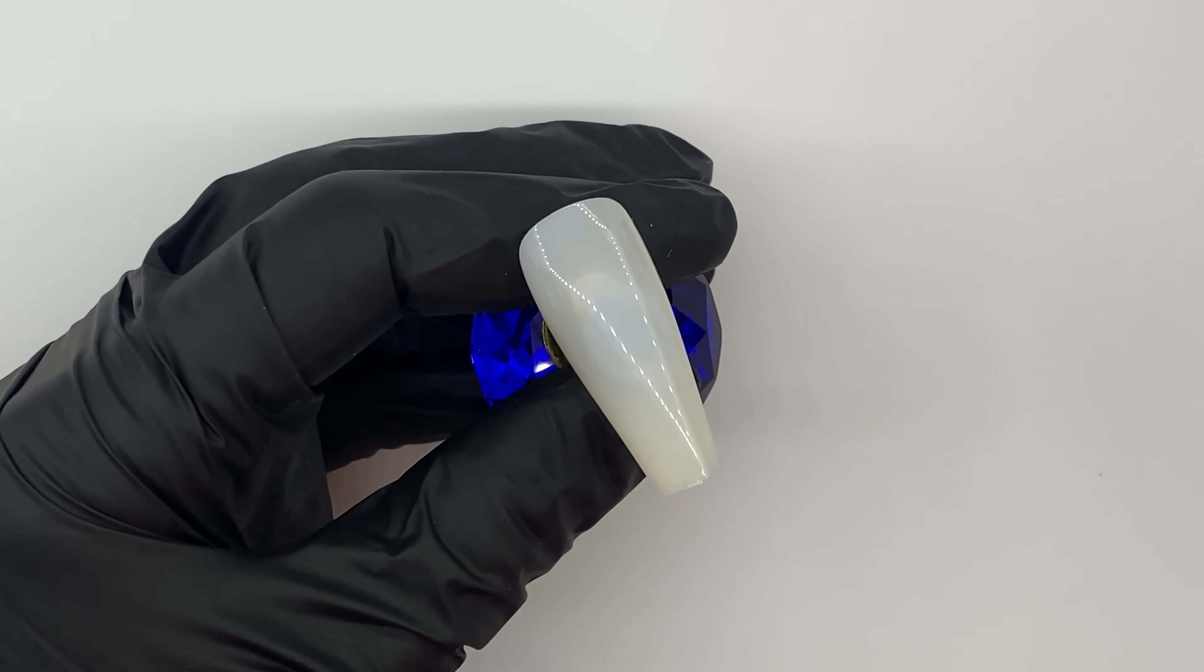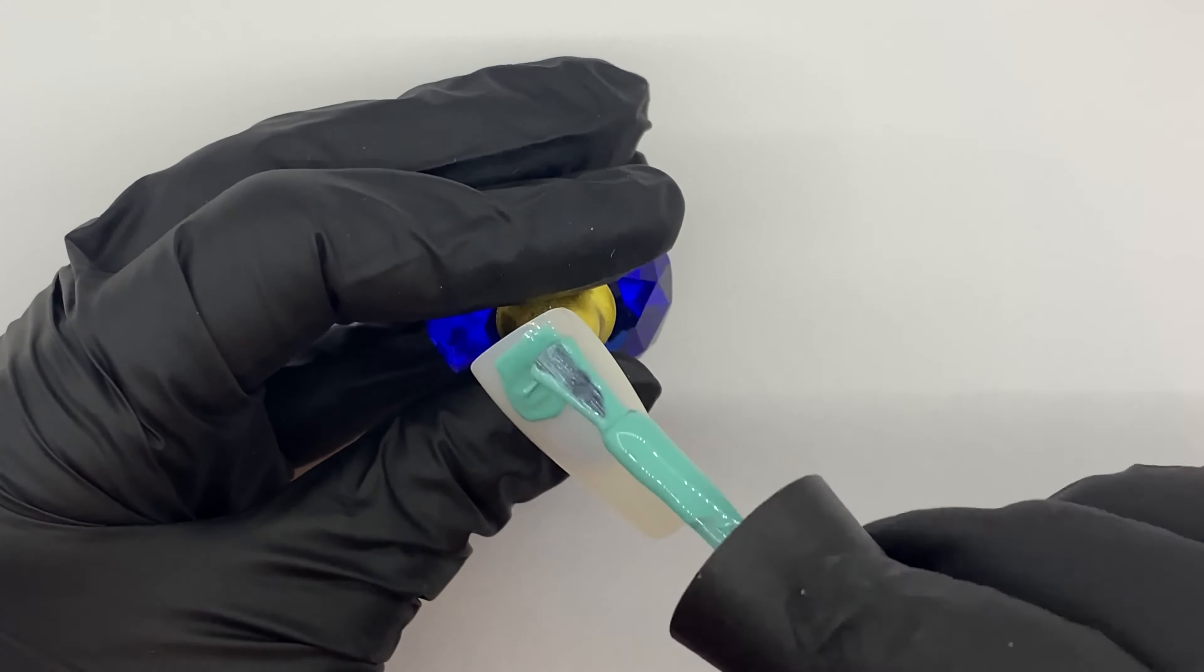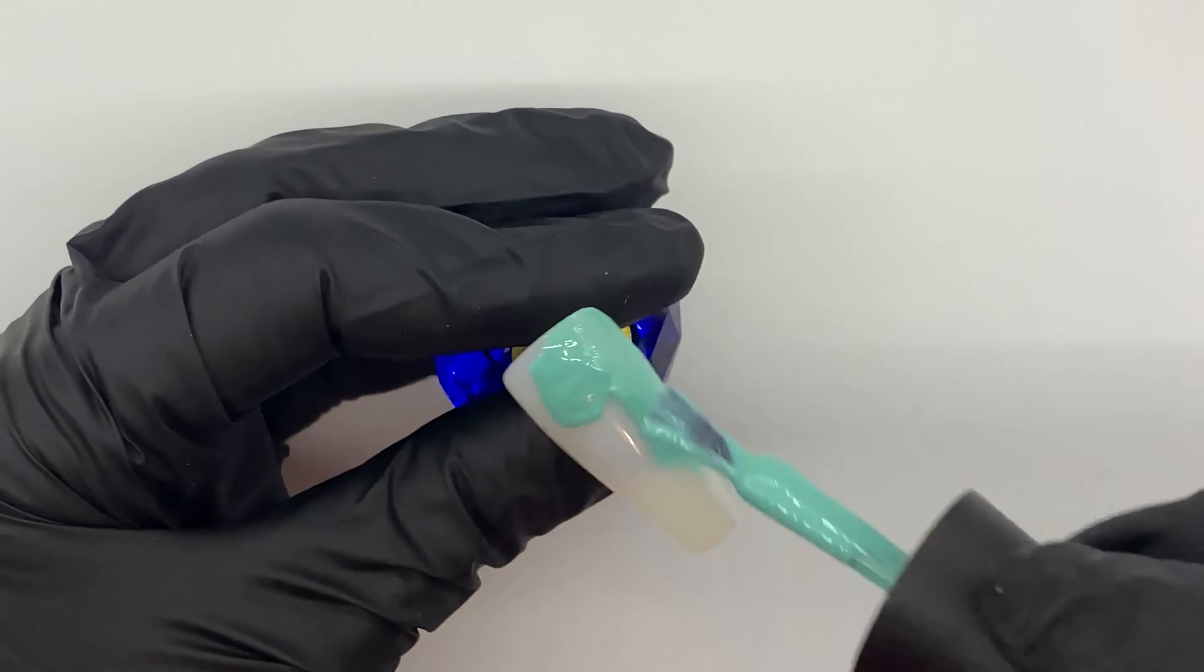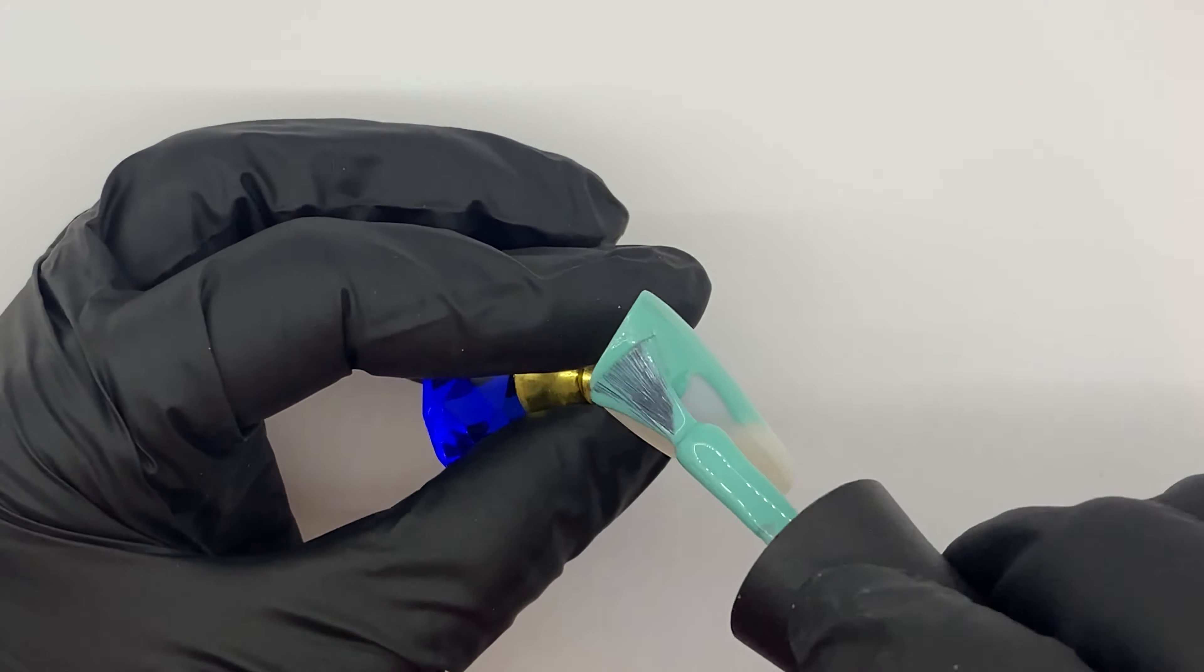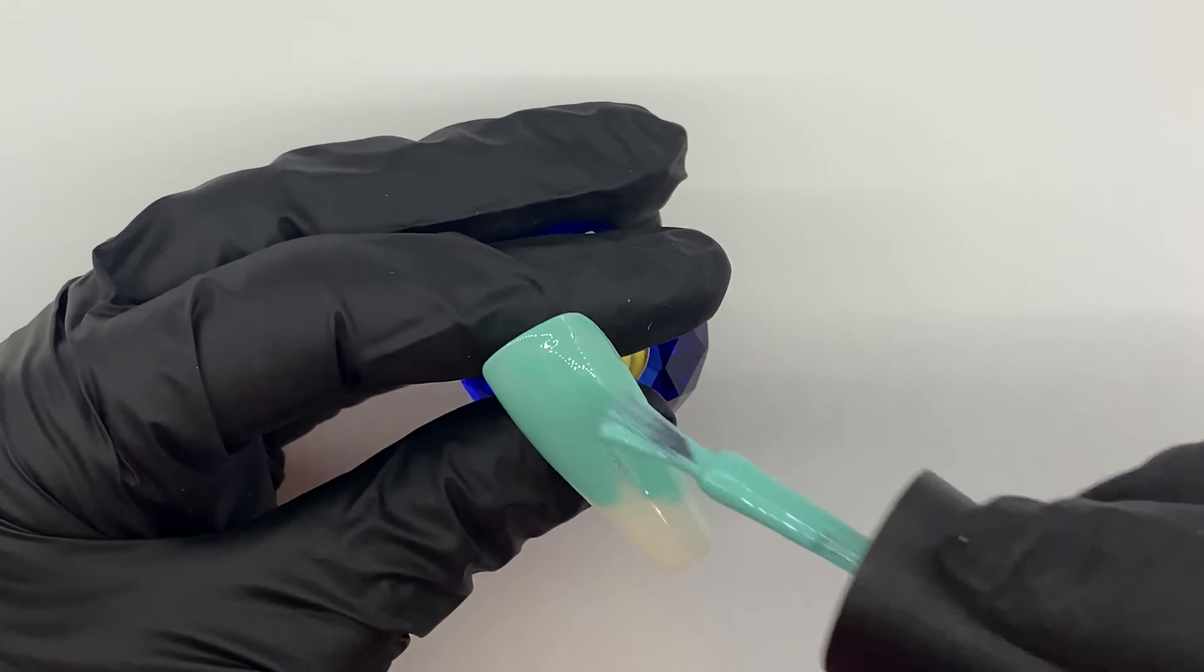First up I'm going in with Looking Glass from Nao Nails. I'm going to do two coats of this, popping it in for a cure for 30 seconds in between each layer.